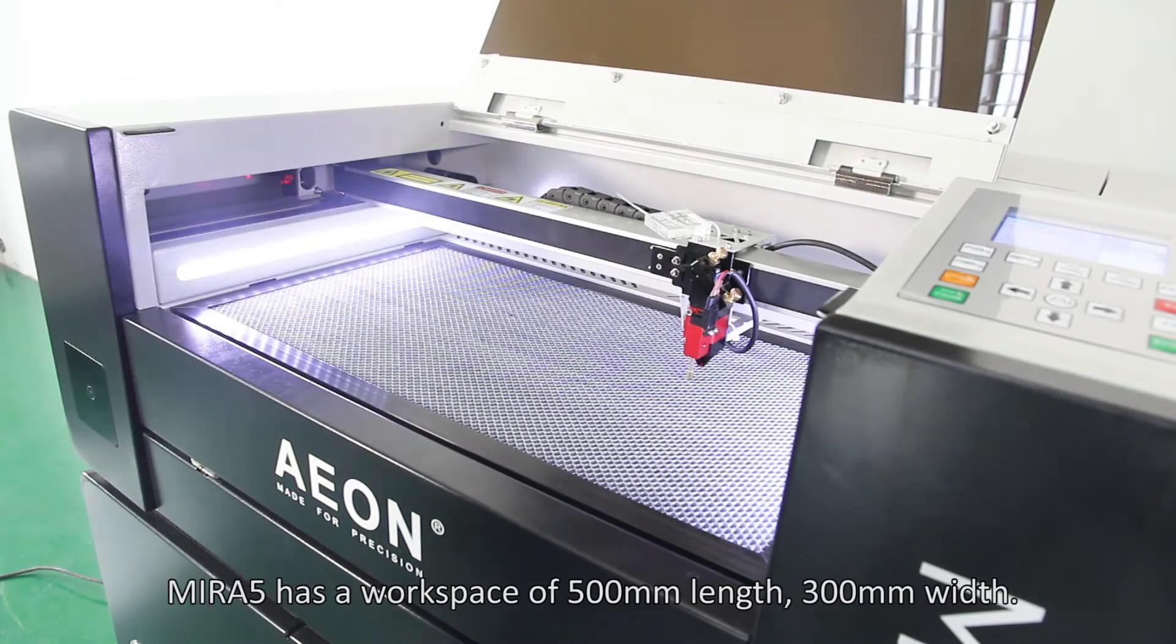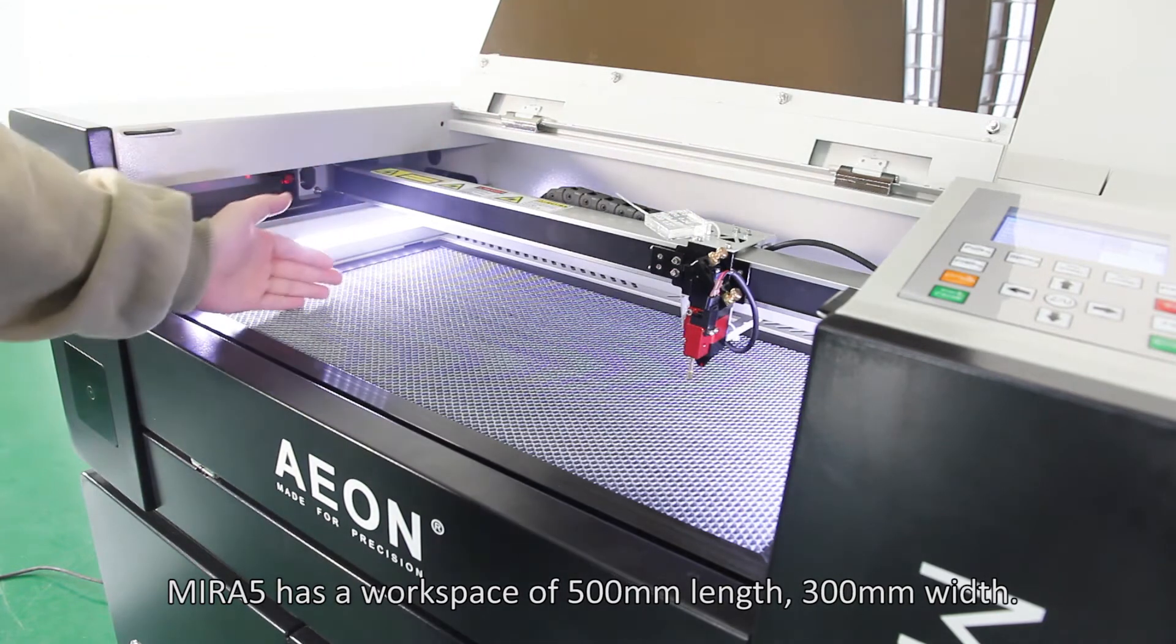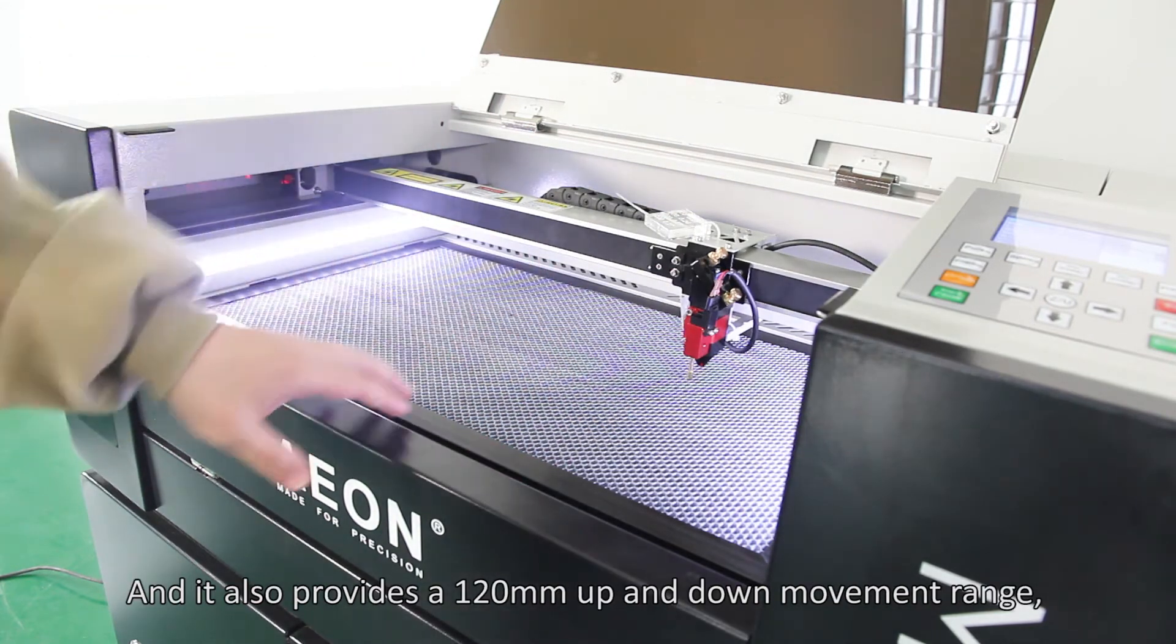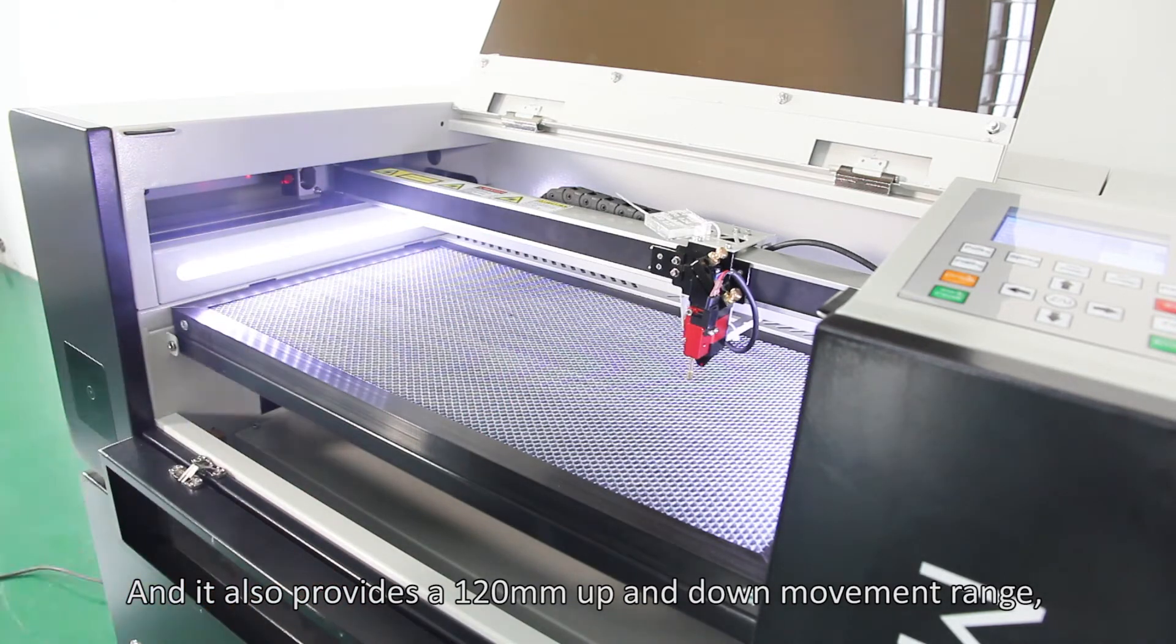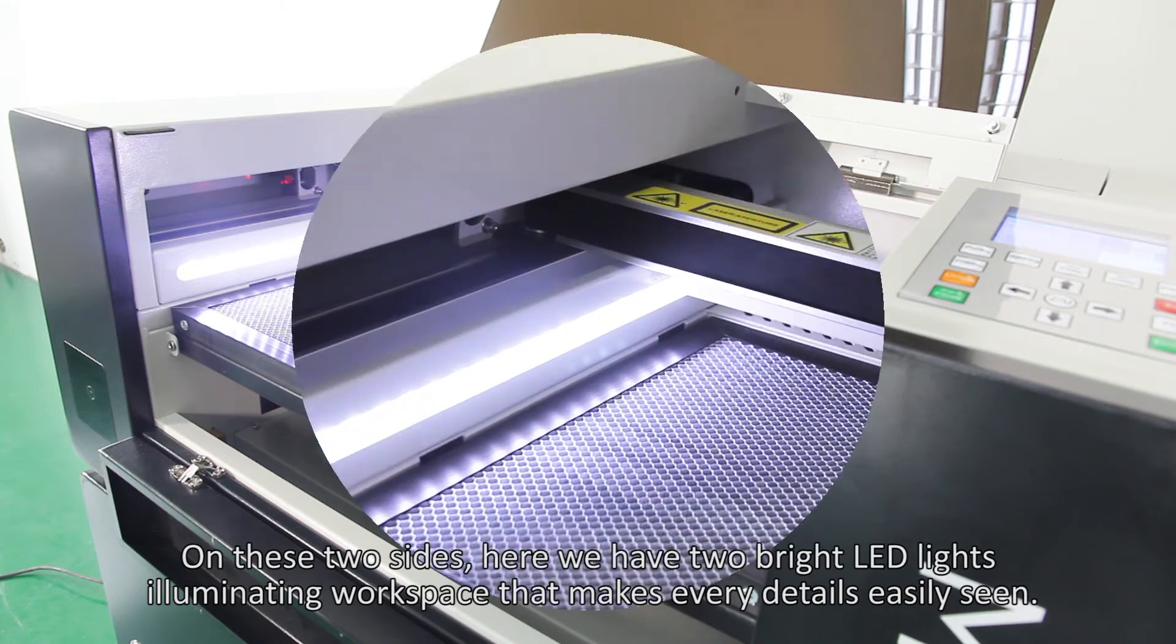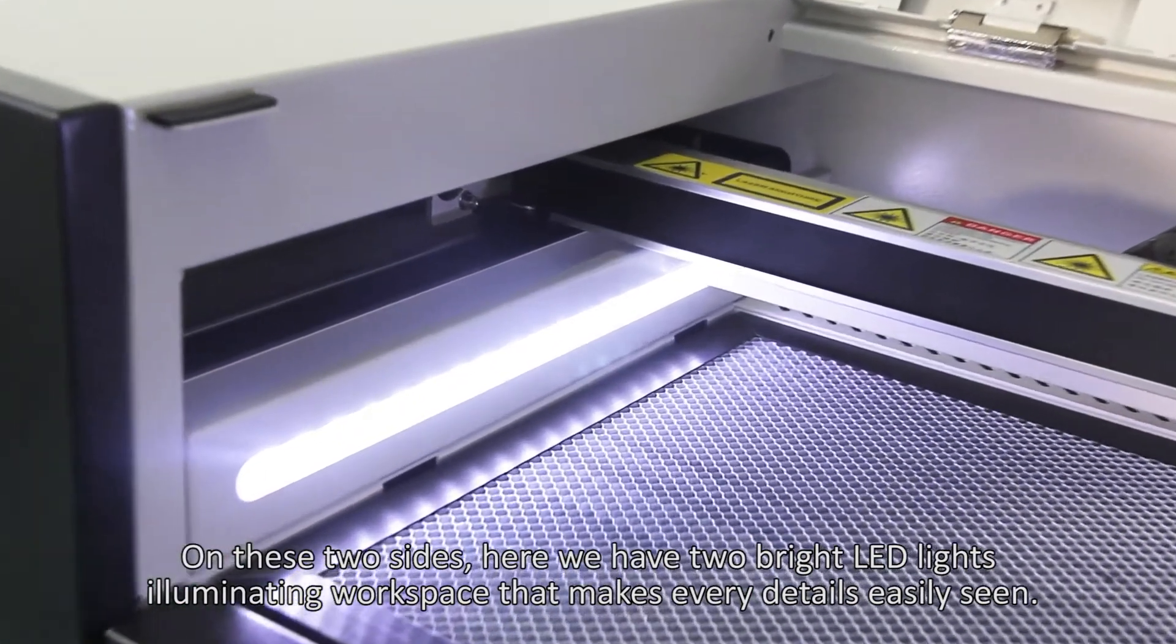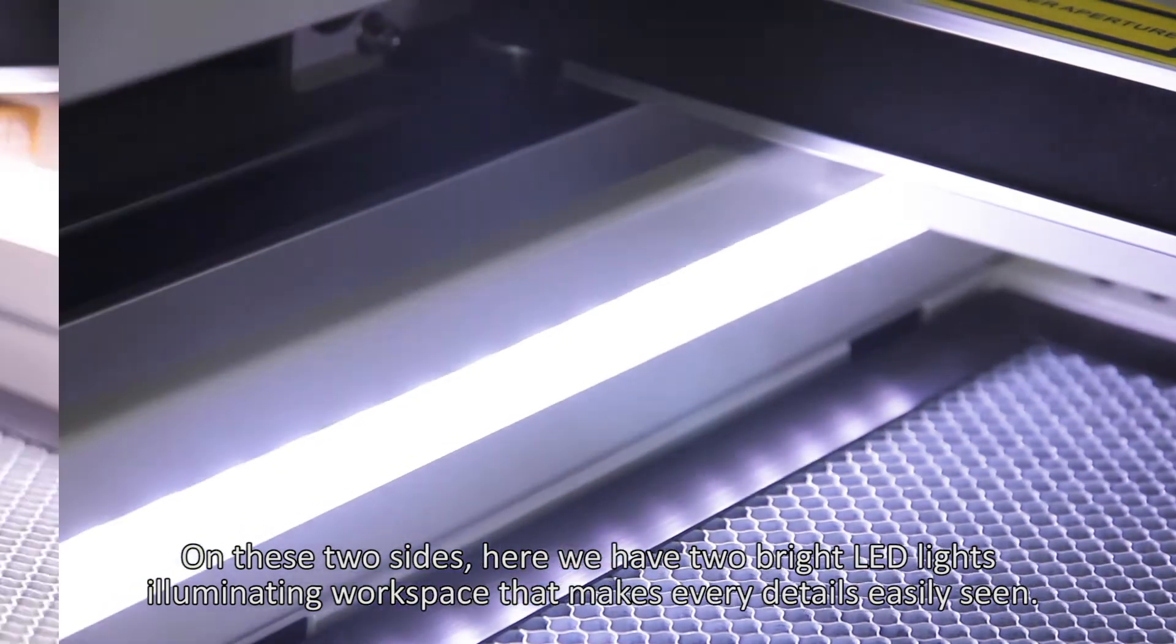Mirafile has a workspace of 500mm length, 300mm width, and provides a 120mm up-and-down movement range, which enables customers to process thicker materials. On these two sides, we have two bright LED lights illuminating the workspace that make every detail easily seen.